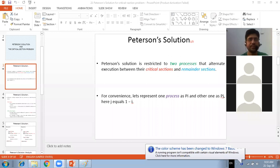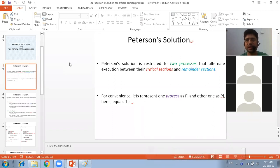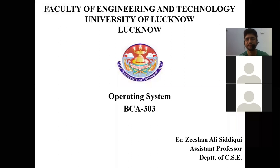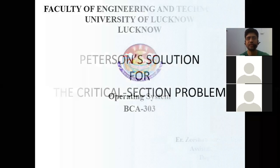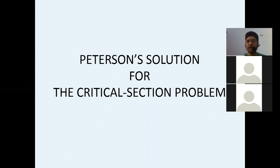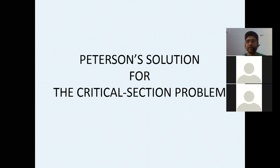We will finish this topic today. The topic is Peterson's solution for the critical section problem. This is a continuation of the previous class we had on this topic. I guess everyone has revised this so that we can understand it better again.